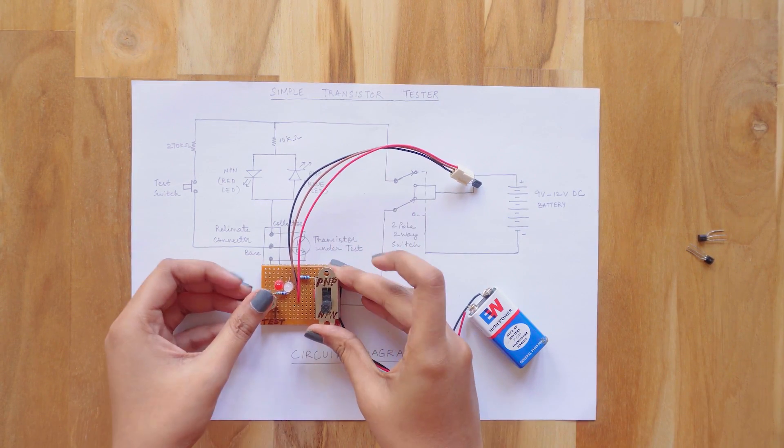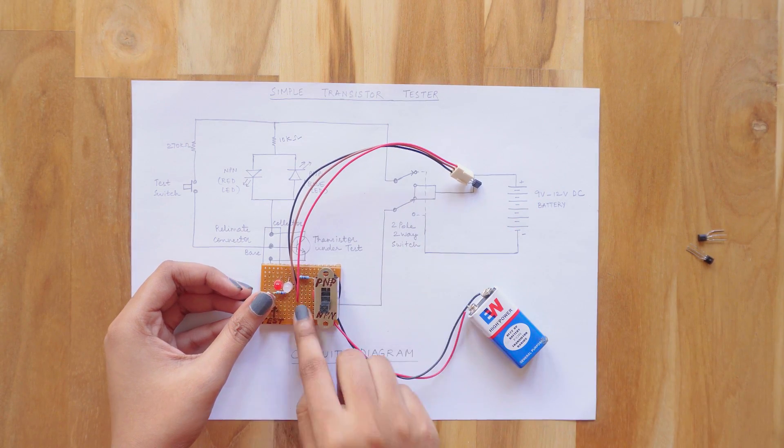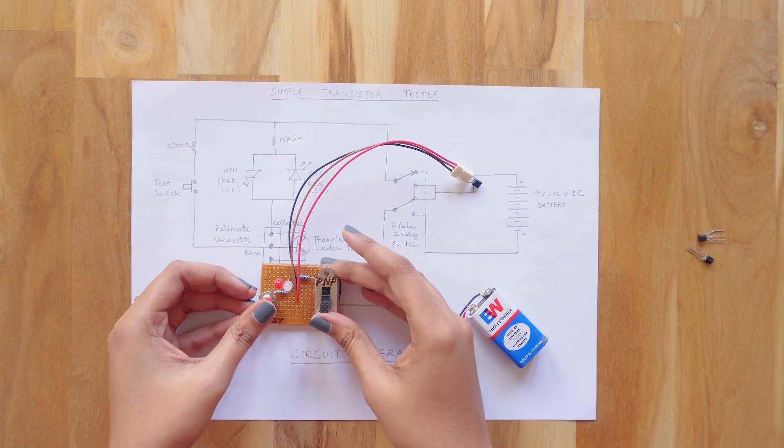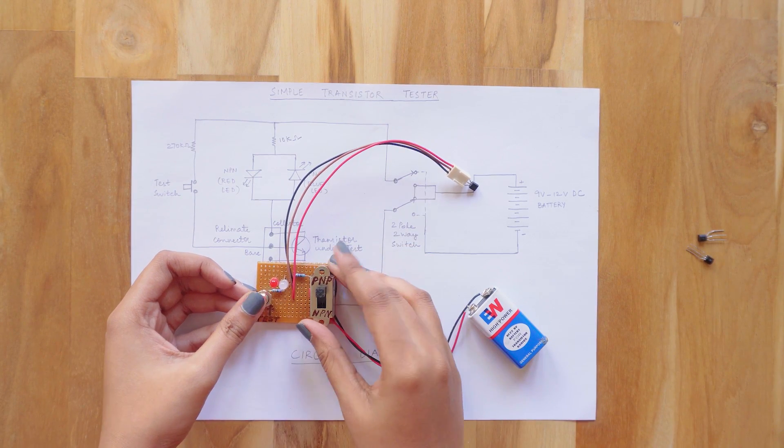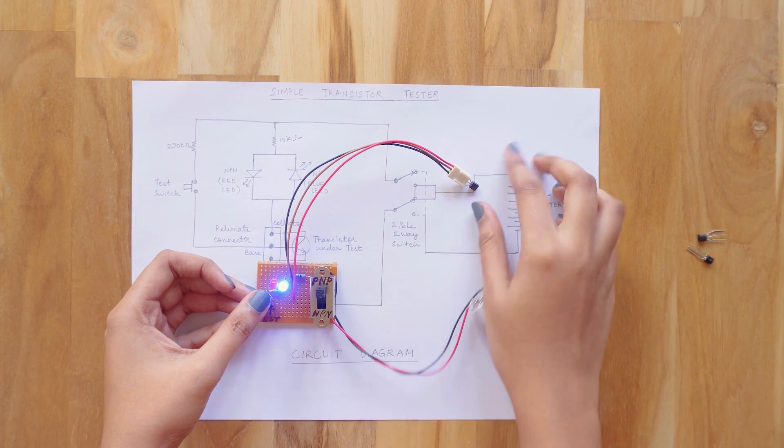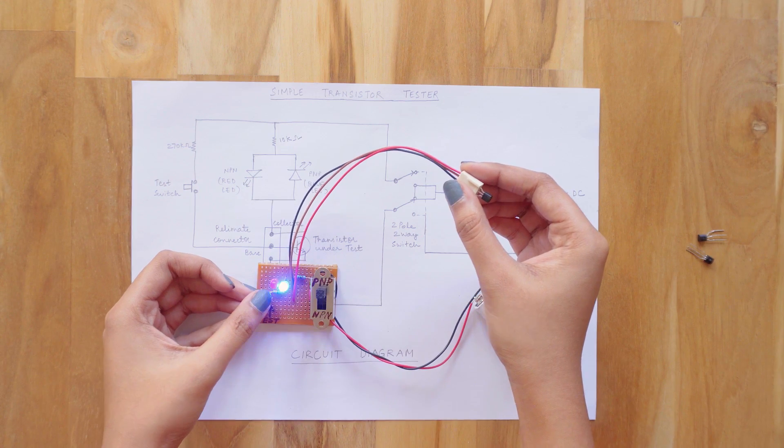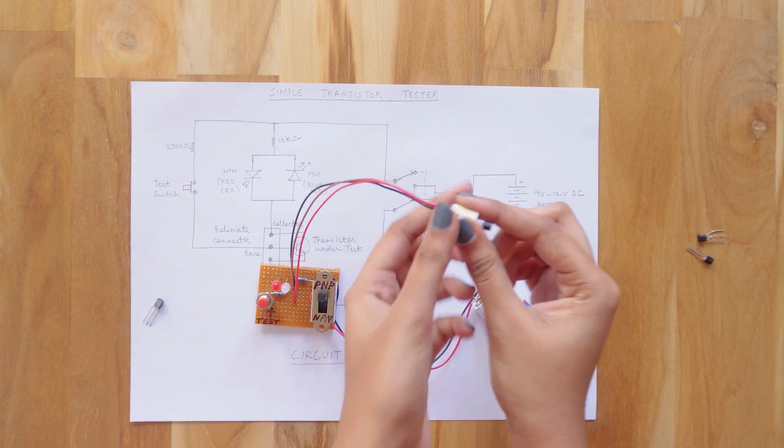Let's switch it on. You see that the LED is not glowing in NPN position. Let's change it to PNP. Oh, the blue LED is glowing which means it's a PNP transistor. And this one is also perfect and working. The circuit is doing its job well.